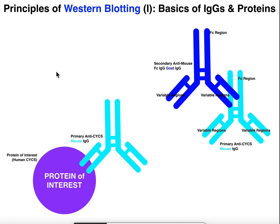Before we go into the procedure for a Western blot, let's talk about the basics of antibodies, IgGs, and proteins and how they interact. Here's a protein of interest — we're actually going to use CYCS for this example, cytochrome C, a protein involved in the electron transport chain in pretty much every organism. I have here an antibody that specifically binds to this protein. Antibodies are part of the immune system but they are exploited for a wide variety of biotechniques including Western blotting, immunofluorescence, and ELISA.